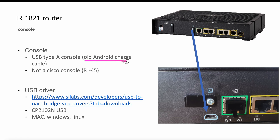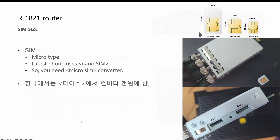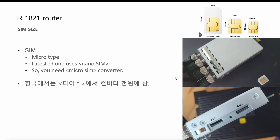USB-A is maybe an old Android charge cable. If you have one, use it; if not, go to a store like Best Buy or Amazon. The driver is available for download and works on Mac, Windows, and Linux. Another thing: the SIM card size — these days every SIM is nano SIM, but this router uses micro SIM size. Use a converter if needed. I got one at Daiso, a Korean franchise market.